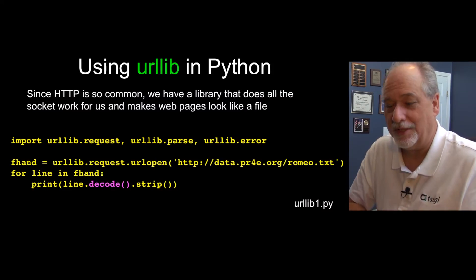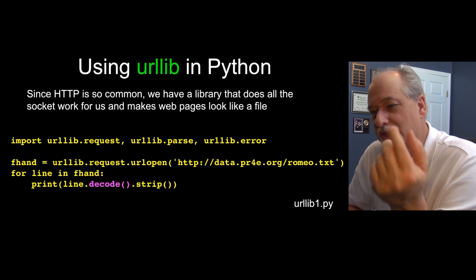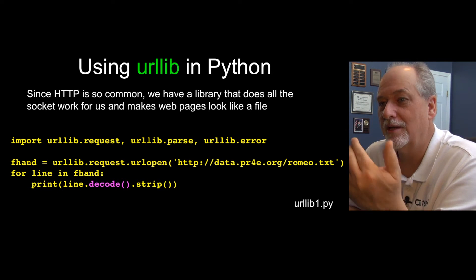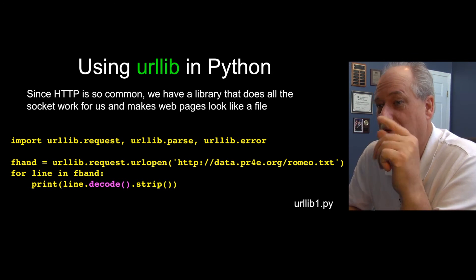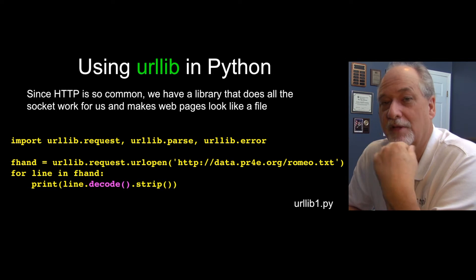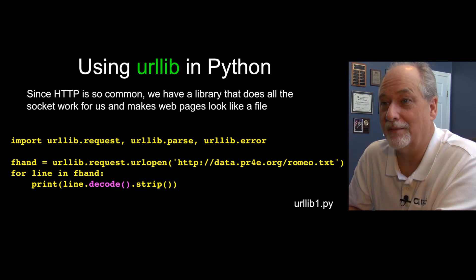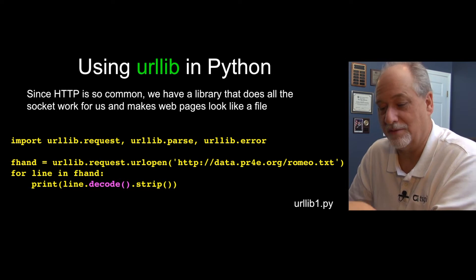urllib exists because the idea of opening a connection, sending a GET request, sending the new line, retrieving the stuff, breaking the headers out — all of this is so common, why not put it in a library to save ourselves some effort?